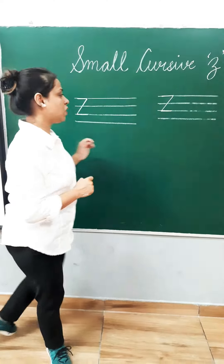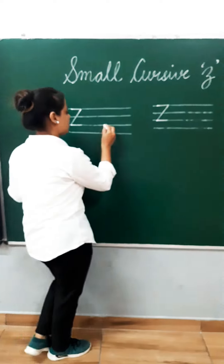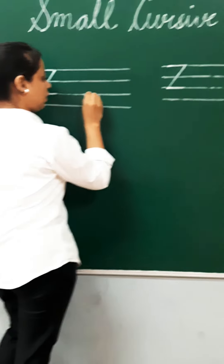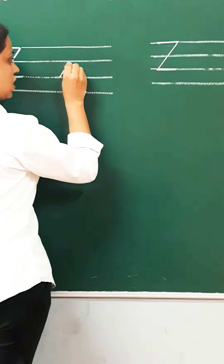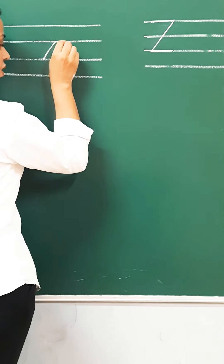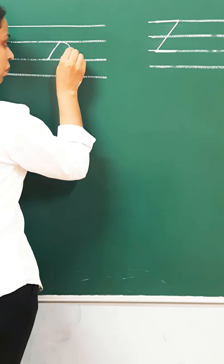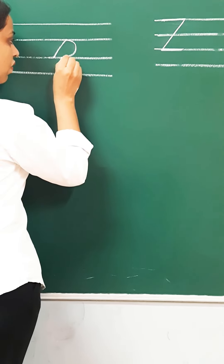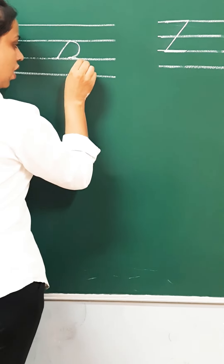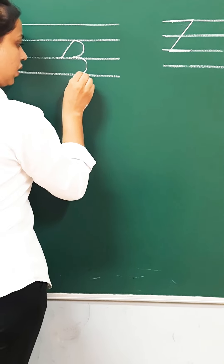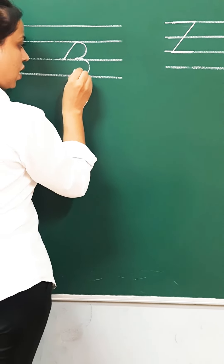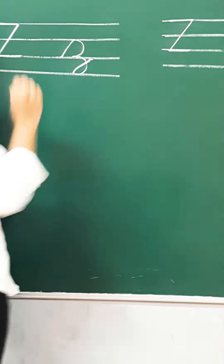Now see the formation of small cursive Z. You have to start from the third line. Make one slanting line at the second line. Turn your pencil to the right. Make an opposite curve like C. Then again a curve like this. Then turn your pencil up like this.